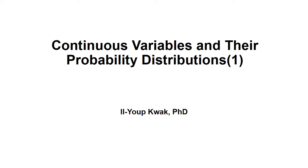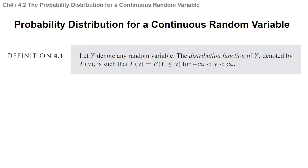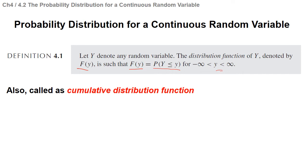Now we will learn Chapter 4: Continuous Variables and their Probability Distributions. For the probability distribution for a continuous random variable, let's define the distribution function first. The distribution function for y, denoted by F, is such that F(y) = P(Y ≤ y) for y from minus infinity to infinity. This distribution function is also called the cumulative distribution function.